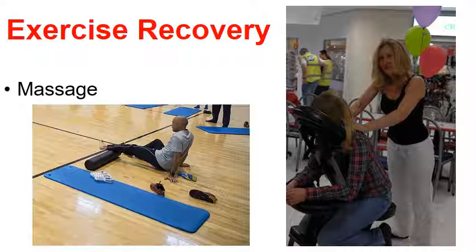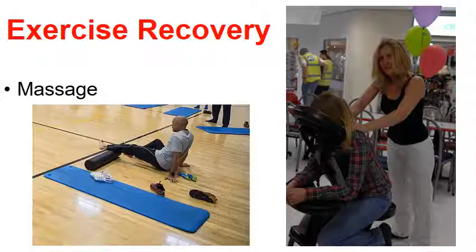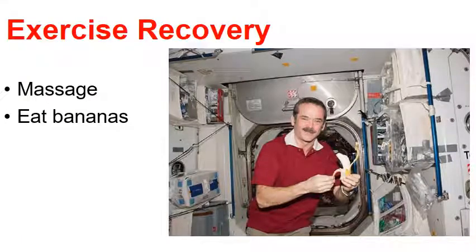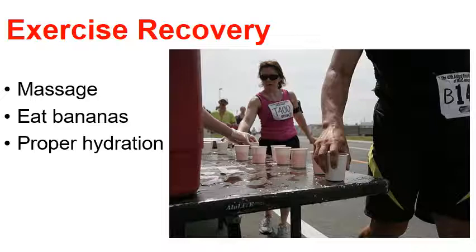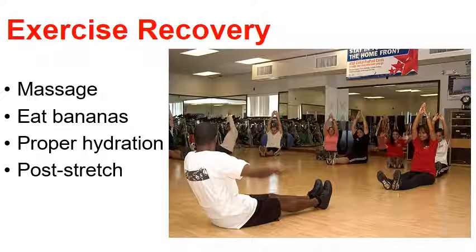While we're on the topic, here are a few ways to help recover from exercise. Good ways to relieve soreness include massage — whether through a professional masseuse or a foam roller. Also, eating bananas which are high in potassium — potassium is really important in your muscles' ability to stretch and contract, making it a key nutrient in muscle recovery. Proper hydration pre-, during, and post-workout is one of the keys to reducing and preventing soreness. And performing a post-stretch is one of the better ways to help relieve muscle soreness.